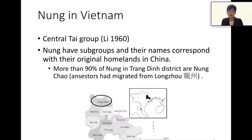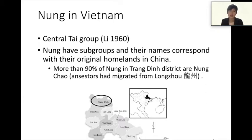Before we get to the main subject, I would like to talk about the background of Chanding NUN, which is the target of this presentation. The NUN language is spoken by the NUN people, who live in the north-east of Vietnam. Chanding District is in Ransom Province, Vietnam, as shown in this picture.